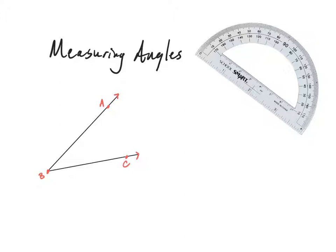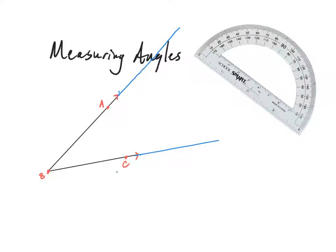The first thing I'm going to do when I'm ready to measure this angle is take my straight edge and extend each of my rays. We do this to make sure that each side of your angle will actually reach the protractor. I'm taking a ruler and lining it up with each side of the angle and using my pencil to extend each ray along the ruler. We want to use a straight edge so that we maintain the exact straight lines of our rays.